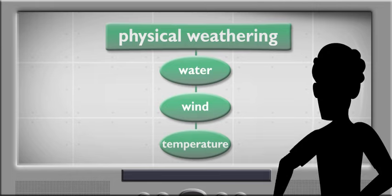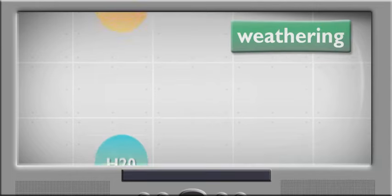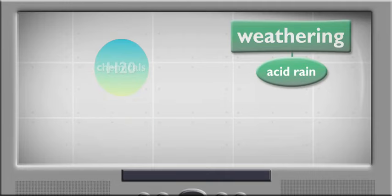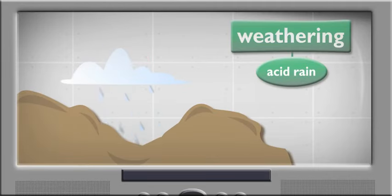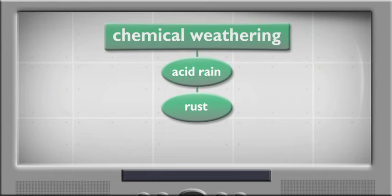Wow. That's only the beginning. There's another whole side to weathering's personality. Chemicals in the air mix with water to make acid rain that eats away at limestone rocks. Oxygen reacts with iron and forms rust. That's chemical weathering.